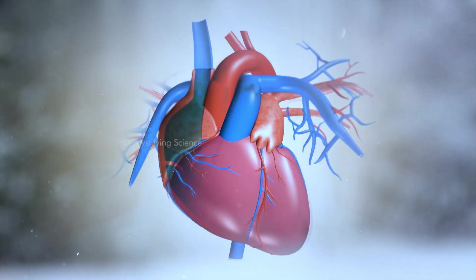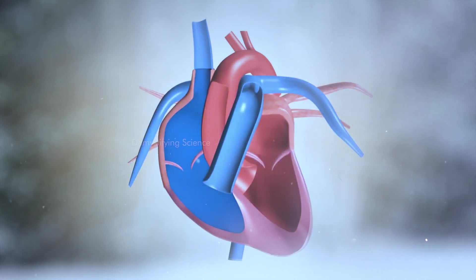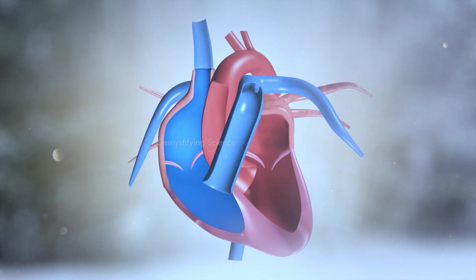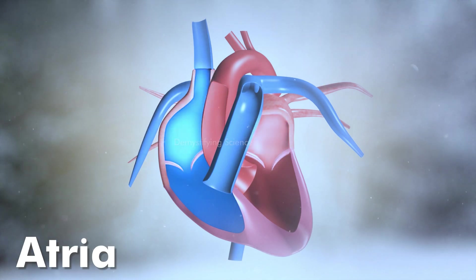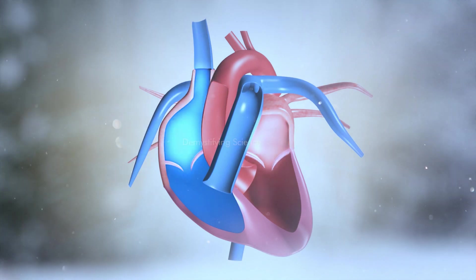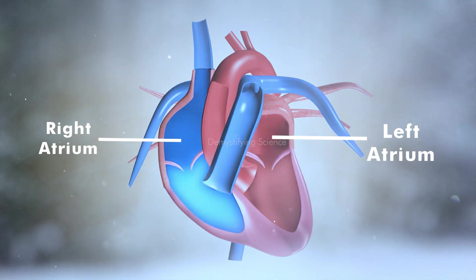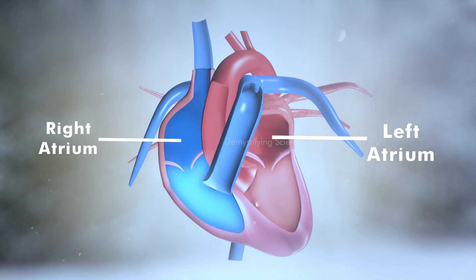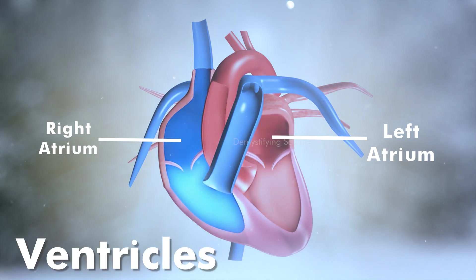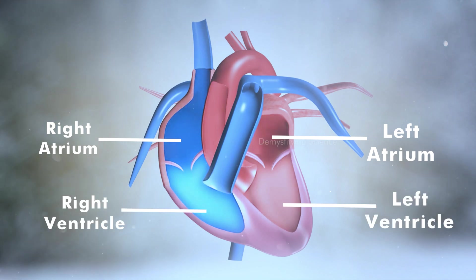The heart consists of four chambers. Two chambers are located in the upper portion of the heart called atria, which consists of the right and left atrium. Two chambers are located in the lower portion of the heart called ventricles, which consists of the right and left ventricle.